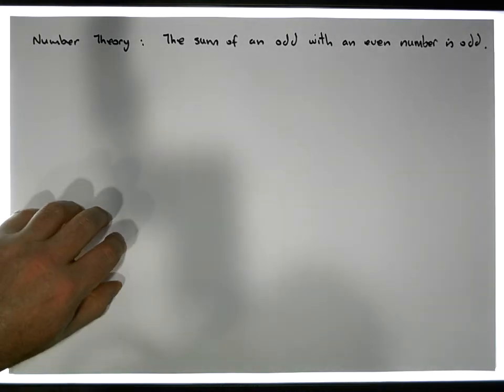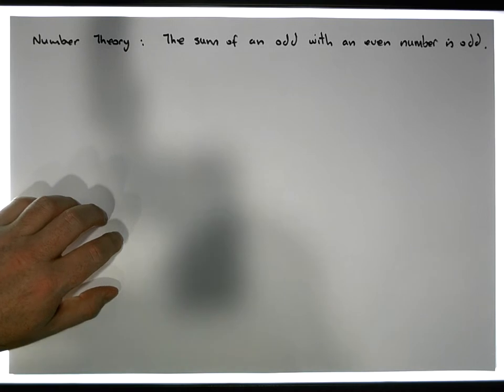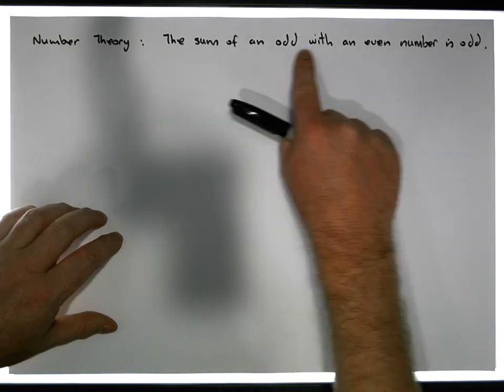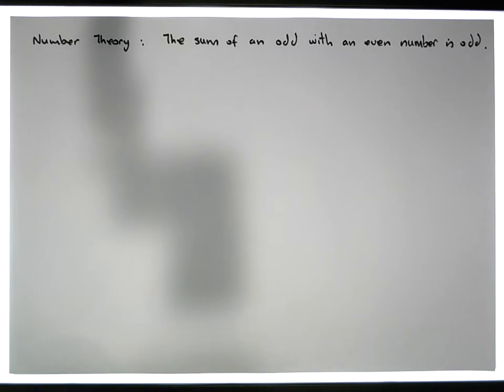This is sort of a fact that we take for granted and just work with. But what we'd like to show is, we'd like to give a little proof to show that the sum of an odd number with an even number is actually in fact an odd number.